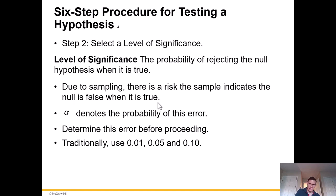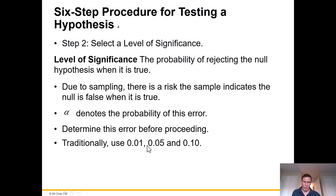Step two is to select a level of significance — the probability of rejecting the null hypothesis when it is true. Due to sampling, there is a risk the sample indicates the null is false when it's actually true. This probability is denoted alpha. We always determine this before proceeding. Traditionally, common values are 0.01 (1%), 0.05 (5%), or 0.10 (10%). There's no strict requirement, but most researchers publishing work use 5% as the standard significance level.